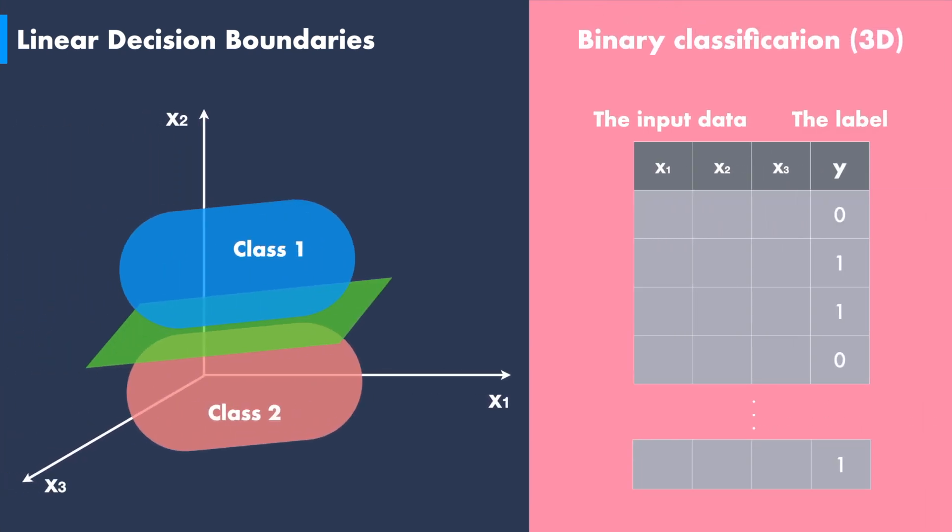For binary classification problems with three input features x1, x2, and x3, the decision boundary that separates the two classes of data is a 2D plane.